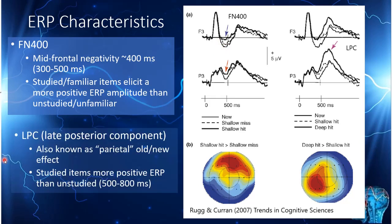The LPC happens a little bit later — 500 to 800 milliseconds is the prototypical window — and it is often greater at the parietal electrodes, so it's sometimes known as the parietal old/new effect, although this can change with other stimuli like pictures. Again, studied items elicit a more positive ERP than unstudied items. There's lots of evidence linking the FN400 to familiarity and the LPC to recollection.